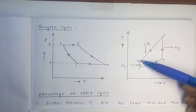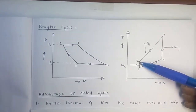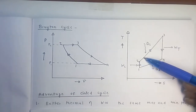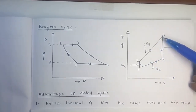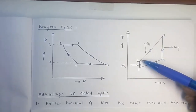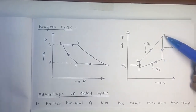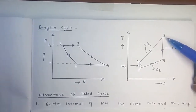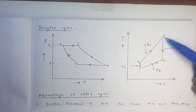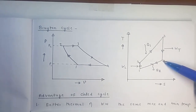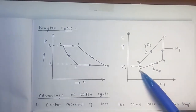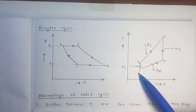On the TH diagram: process 1→2 is reversible adiabatic compression — both pressure and temperature increase. Process 2→3 is constant pressure heat addition in the combustion chamber (open cycle) or heat exchanger (closed cycle). Process 3→4 is isentropic expansion of high pressure, high enthalpy gas to low pressure in the turbine, giving work output. Process 4→1 is constant pressure heat rejection — to atmosphere (open cycle) or intercooler (closed cycle).